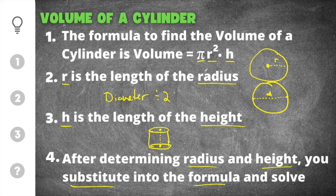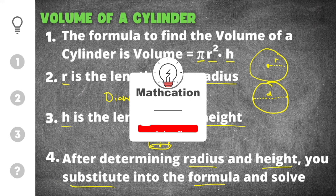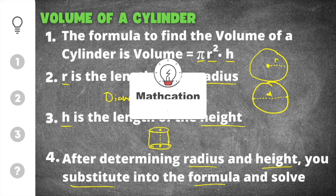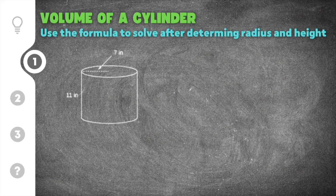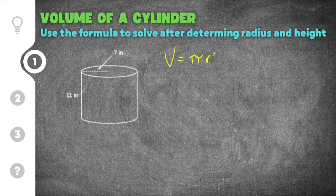Then you will use your calculator to solve for the volume of that cylinder. Don't forget to subscribe so you don't miss out on other helpful math videos. Let's do our first practice problem of three on volume of a cylinder. We have a cylinder labeled with 7 inches and 11 inches, and the formula for volume of a cylinder is pi times the radius squared times the height.